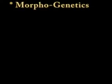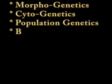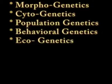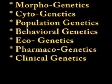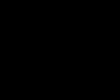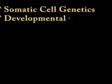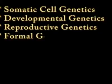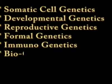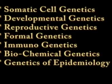The rapid development of human genetics during recent decades has created many interactions with other fields of science and medicine. For the sake of convenience, the study of modern human genetics has been divided into the following branches: morphogenetics, cytogenetics, population genetics, behavioral genetics, ecogenetics, pharmacogenetics, clinical genetics, molecular genetics, somatic cell genetics, developmental genetics, reproductive genetics, formal genetics, immunogenetics, biochemical genetics, and genetics of epidemiology.